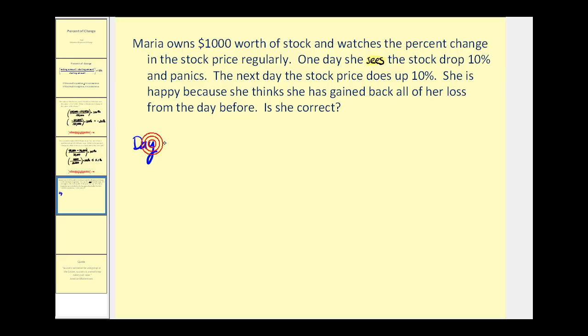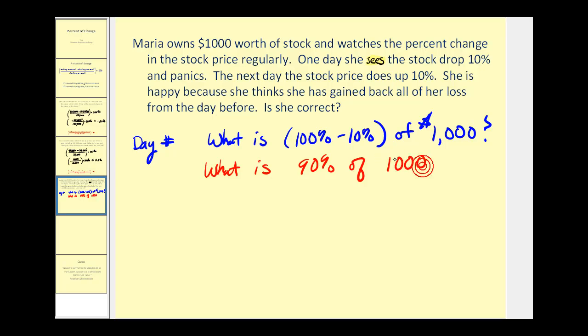On day one, we want to know what is 100 percent minus 10 percent of $1,000. We want to know what is 90 percent of $1,000. Using the percent equation, x is equals 90 percent as a decimal, which is 0.9, times $1,000. 0.9 times $1,000 would be $900.